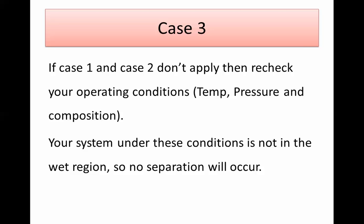If cases one and two don't apply — if changing L/V to smaller or bigger values still gives this problem — then the only other possibility is that your system is not in the wet region. That's why the calculations cannot be done under those conditions. You need to check the bubble and dew point at that pressure and make sure your system is between them. Excel sometimes tells you it's done and you don't check the numbers, and you end up with very weird results, so always do this check.